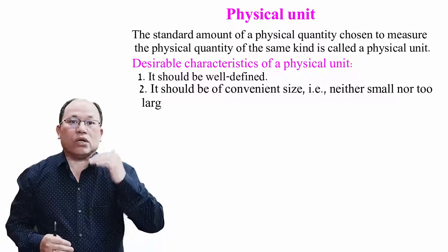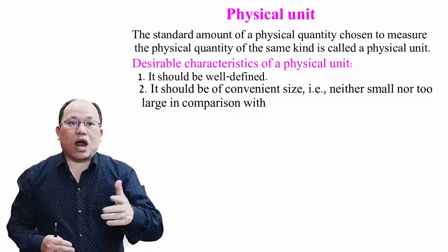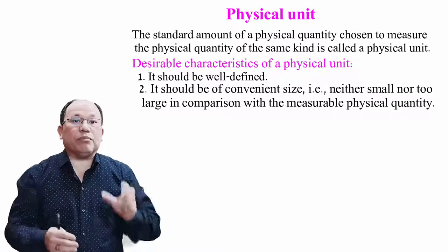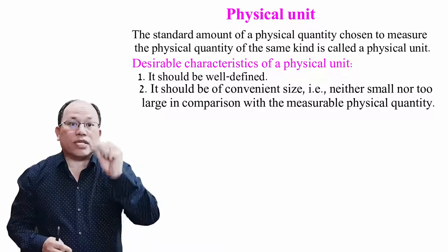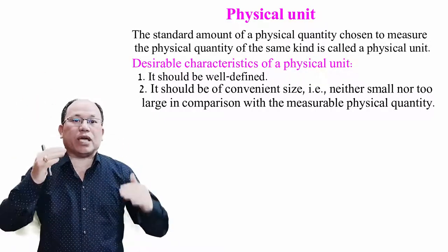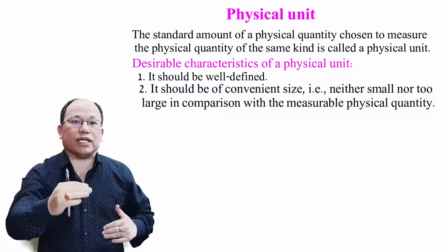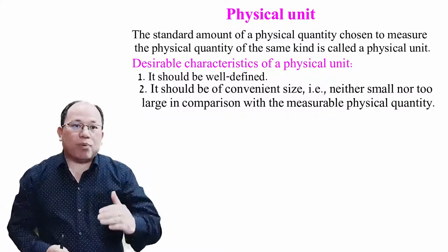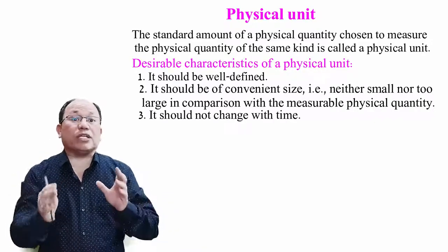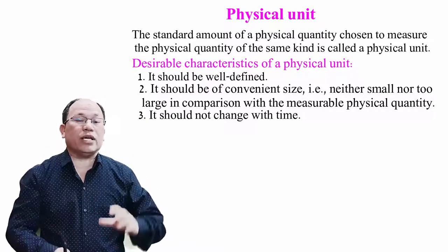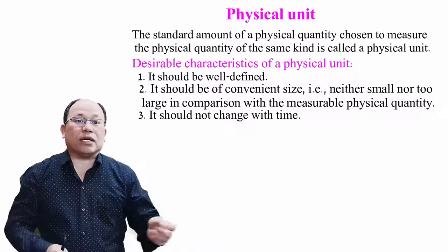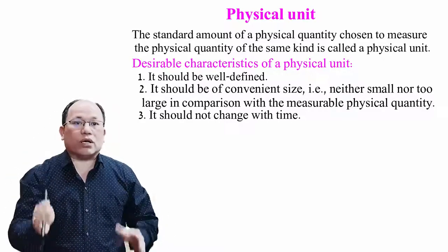That is, neither too small nor too large in comparison with the measuring physical quantity — it should be of convenient size. Third point: it should not change with time. That means the value of a physical unit should not change. Suppose last year the unit of length is a meter, so next year it should remain the same.